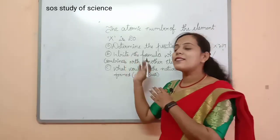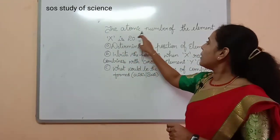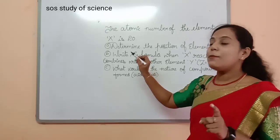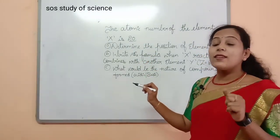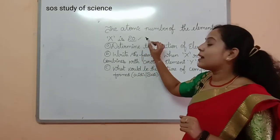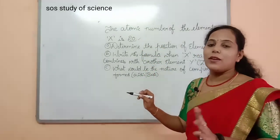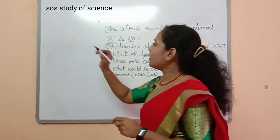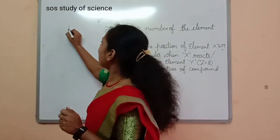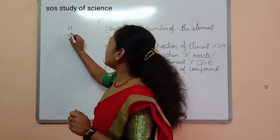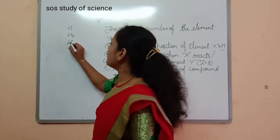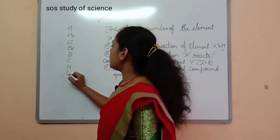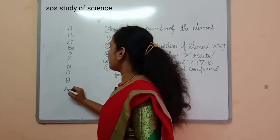In this session, I am going to start with the first question. The atomic number of element X is 20. So X is an element with atomic number 20. If you know the name of the 20th element, it is very simple. The first 20 elements are easy to remember. In order: hydrogen, helium, lithium, then beryllium, boron, carbon, nitrogen, oxygen, fluorine, neon.